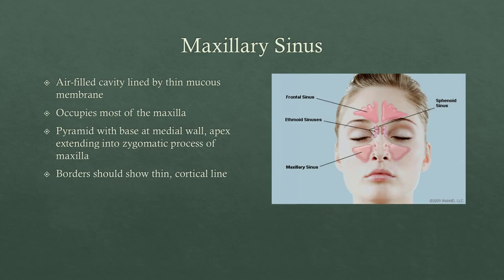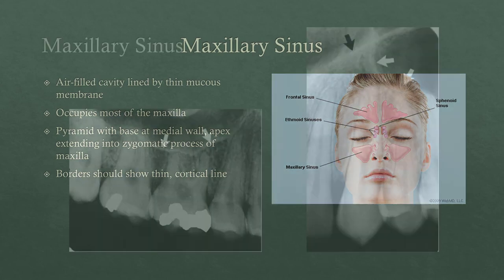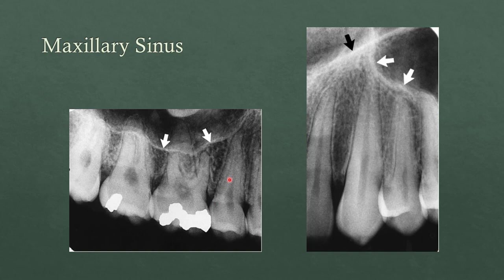The maxillary sinuses are almost always seen in radiographs, especially when taking periapicals of posterior teeth, because there's such an intimate relationship between the maxillary sinus border and the posterior maxillary dentition. Sinuses are air-filled cavities lined by a thin mucous membrane. In perfect health, that membrane is so thin you don't see it at all, but many people have slightly thickened sinus mucosa, which can point to signs of infection or other disease. You should always look for the borders of the maxillary sinus — they should be thin and continuous, forming a thin cortical line. The arrows here are pointing to the wavy line as it undulates between the roots of the teeth.